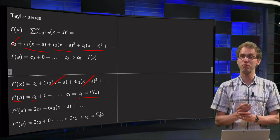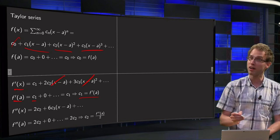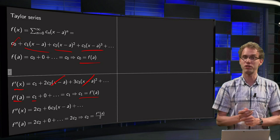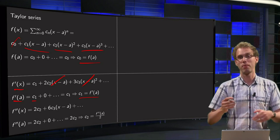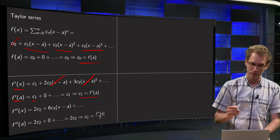So we find c1 equals f prime of a. Now we are going to see a pattern. c0 equals f(a), c1 equals f prime of a, so what about the next one? We do the same trick of course, we differentiate again.